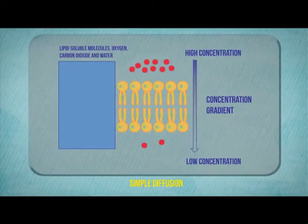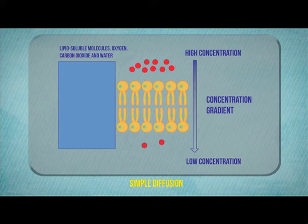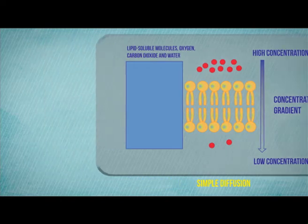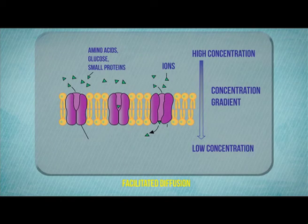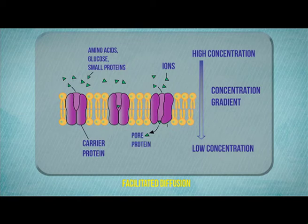In simple diffusion, substances move across the phospholipid bilayer of the plasma membrane down the concentration gradient until an equilibrium is reached. Facilitated diffusion occurs when substances are transported down the concentration gradient with the help of carrier proteins or pore proteins.